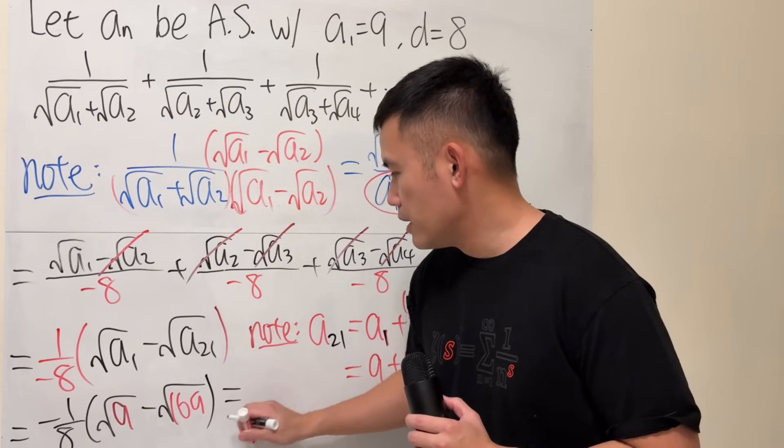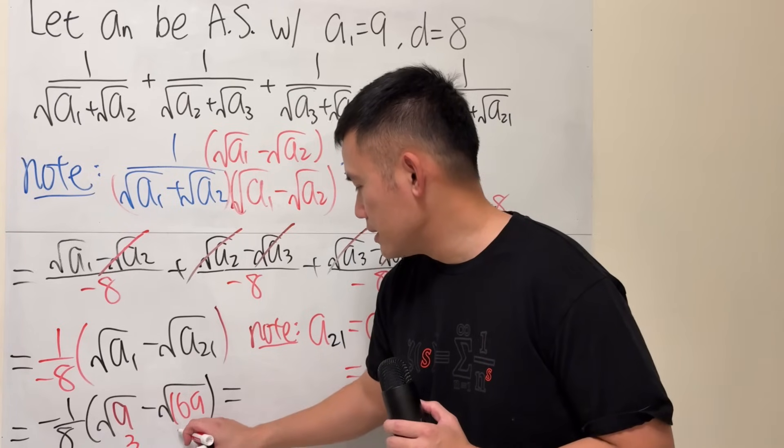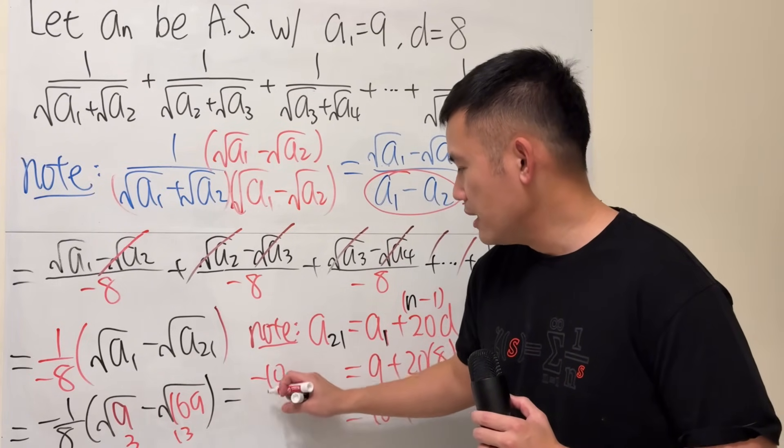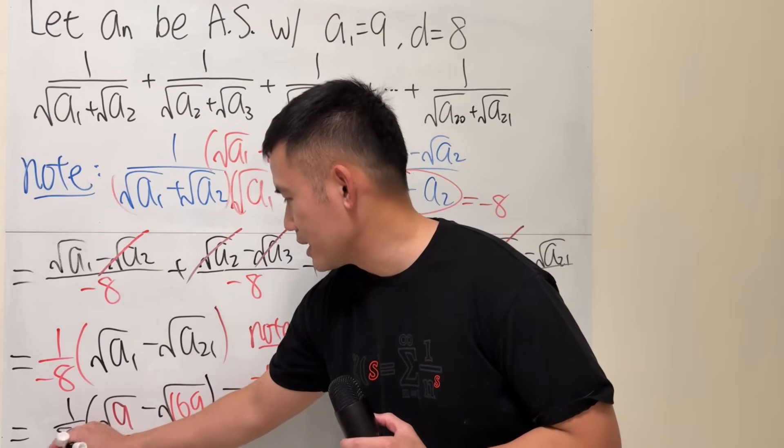Okay. So, this right here is, of course, 3. And this is 13. So, 3 minus 13 is negative 10 over negative 8. Let me still put a negative right here then, I guess.